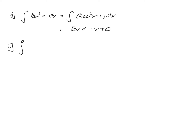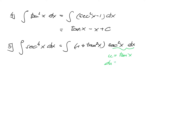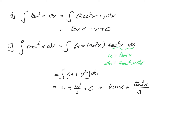The fifth example: calculate the integral of secant to the power 4 of x. Using the formula secant squared equals 1 plus tangent squared, we split off only secant squared rather than the full power 4. So this is the integral of 1 plus tangent squared of x times secant squared of x dx. Set u equal to tangent of x; then du is secant squared of x dx. The integral becomes the integral of 1 plus u squared du, which is u plus u cubed over 3 plus a constant. Replacing u: tangent of x plus tangent x to the power 3 divided by 3 plus a constant.